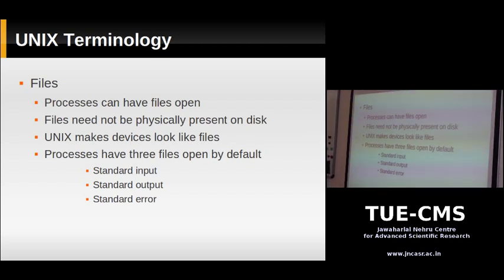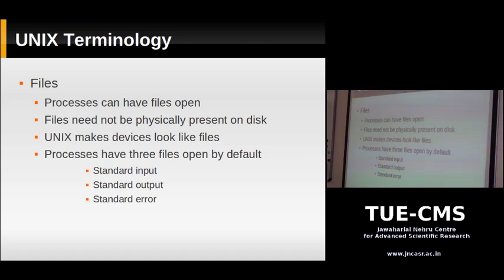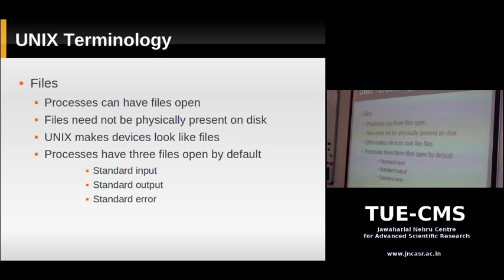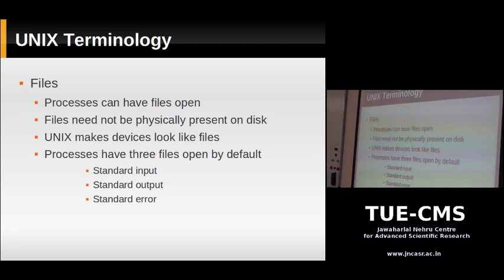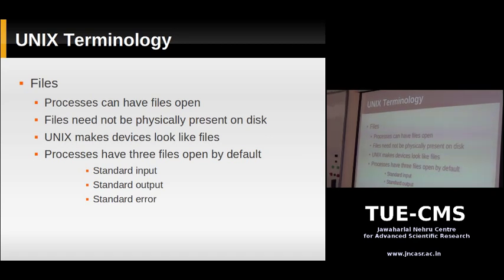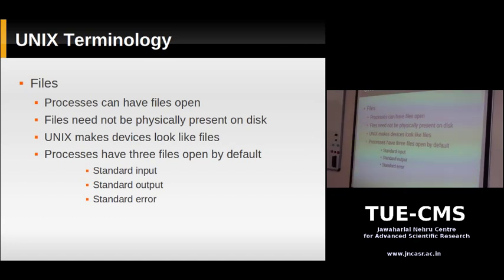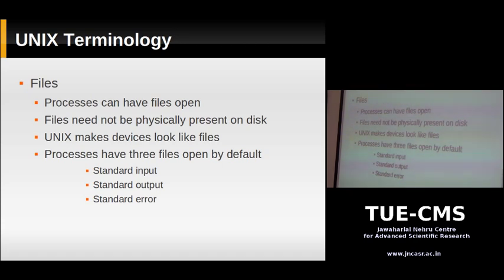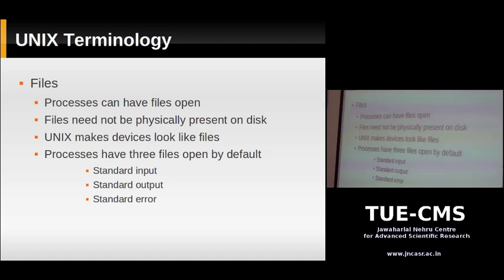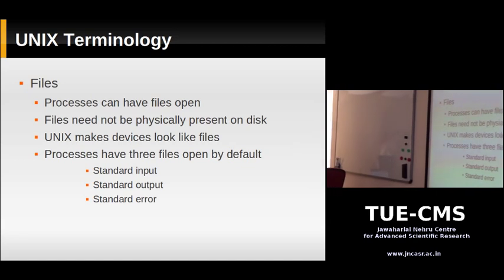When you talk about files, you usually think of a file that sits on a hard disk. In Unix, a file is a little more general. A process can open a number of files for reading and writing. In Unix, a file doesn't need to physically exist on a hard disk. There are things called device files. For example, think of your modem — in Windows you might notice COM1 and COM2 special devices for modems. In Unix, it's just a file: there's a file called /dev/ttyS0.